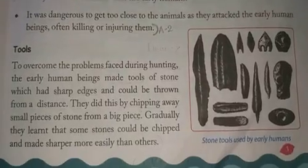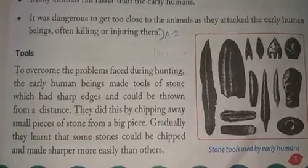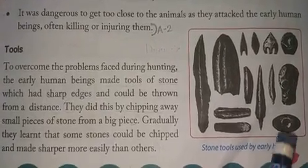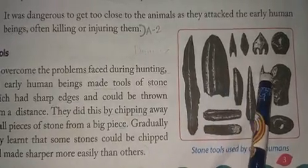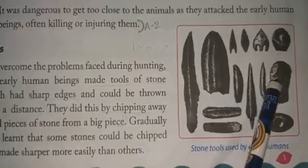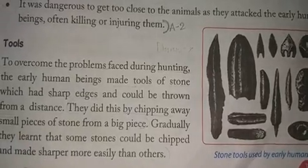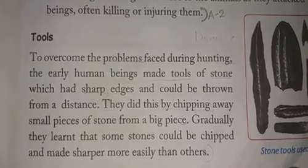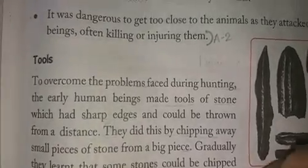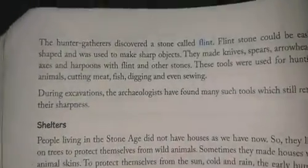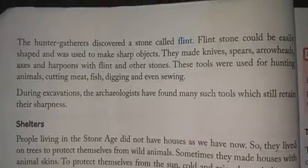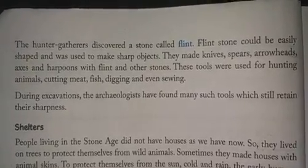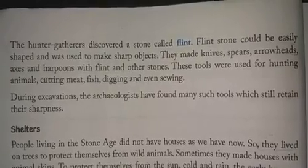To overcome these problems, they made tools of stones with sharp edges that could be thrown from a distance. They did this by chipping away — breaking small pieces from a big stone. Slowly they understood that some stones could be broken and made sharper more easily than others. They discovered thin stones that could be easily shaped, used to make sharp objects like knives, spears, arrowheads, axes, and harpoons.